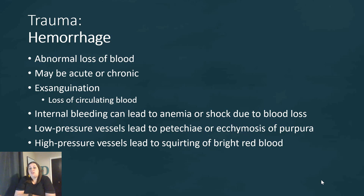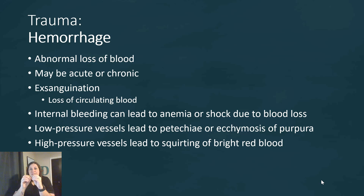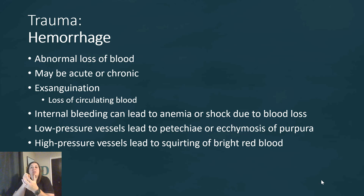Internal bleeding can lead to anemia, which can lead to shock. Low pressure vessel breaks cause petechiae, ecchymosis, and purpura — small spider-web-like breaks in blood vessels and bruising. High pressure vessel ruptures result in squirting of bright red blood due to the pressure generated by each heartbeat.